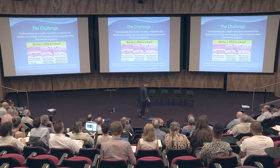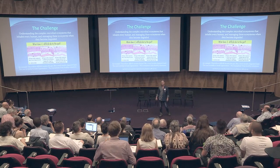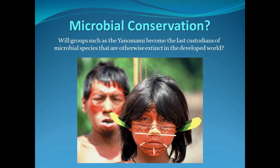We don't understand the full system, but we understand enough to know that its complexity can be restored by using a previously complex system. On microbial conservation: there are a whole series of organisms that are extinct in modern urbanised society, meaning that people like the Yanomami may well become, in addition to custodians of knowledge, custodians of important organisms that are otherwise extinct in us.